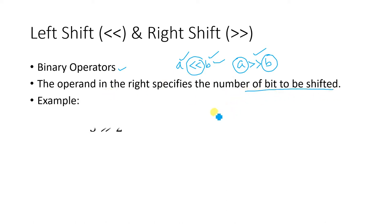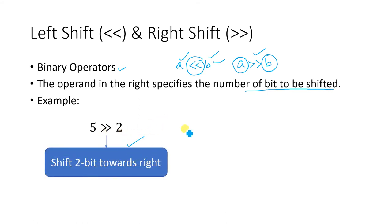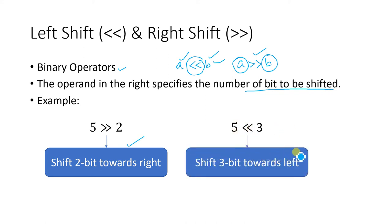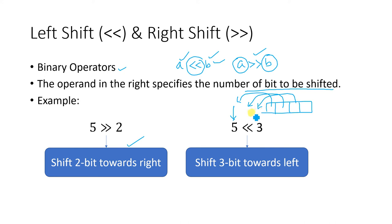For example, if I write '5 right shift 2', it means shifting two bits towards the right. Similarly, if I write '5 left shift 3', that means shifting three bits towards the left. This means we first represent 5 in binary form, then shift all bits three positions to the left. Whatever value we get after shifting will be your answer.